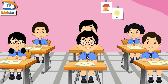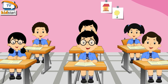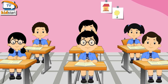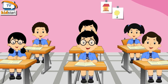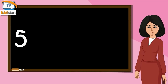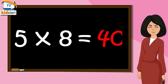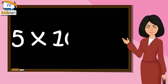Five ones are five. Five twos are ten. Five threes are fifteen. Five fours are twenty. Five fives are twenty-five. Five sixes are thirty. Five sevens are thirty-five. Five eights are forty. Five nines are forty-five. Five tens are fifty.